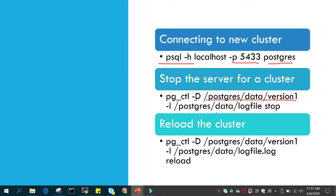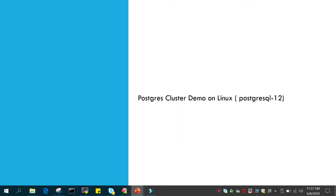If you have to stop it, you just say pg_ctl -d with the location of the data directory, optionally give the log file name, then stop. If you have to reload — for example if you have done some changes — just say pg_ctl -d with the location of the new directory and reload. It is very simple: pg_ctl, location of the new directory, then either start, stop, or reload.